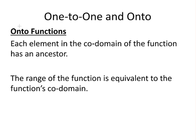Now we're going to look at onto functions. In onto functions, each element in the co-domain of the function has an ancestor. Another way to look at this is that the range of the function is equivalent to the function's co-domain. I've not used the range in this presentation just for the sake of brevity, but when you come across that later on, you can think back to this.